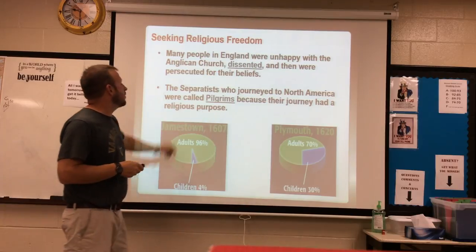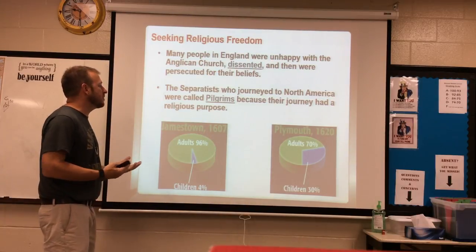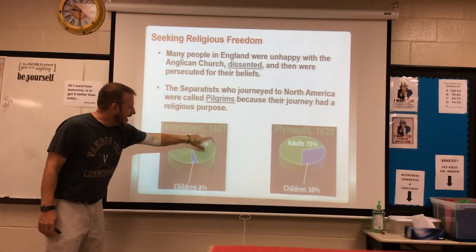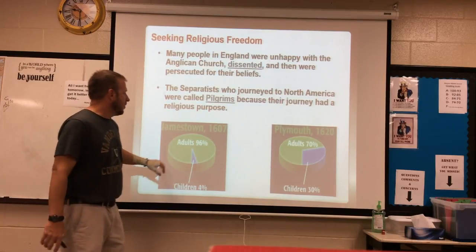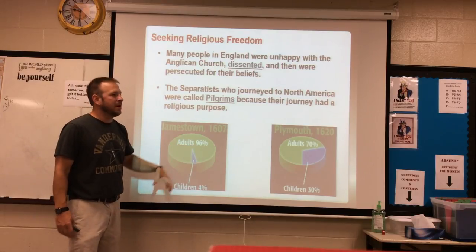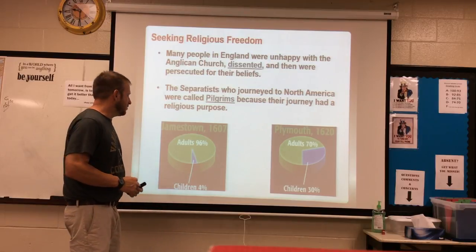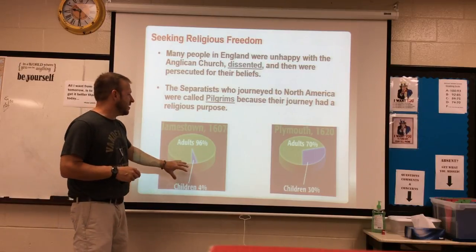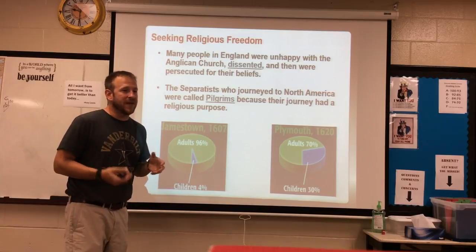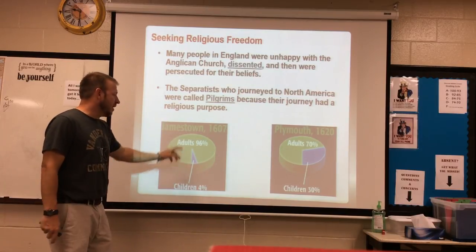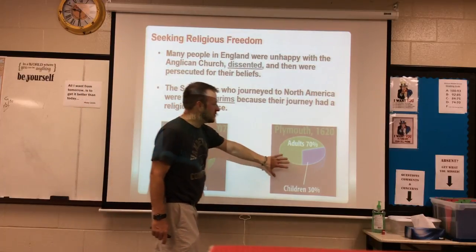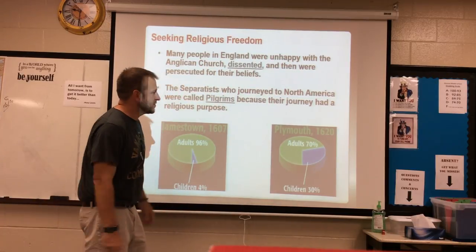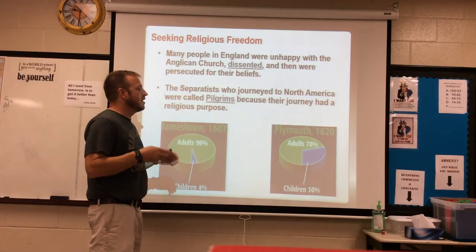The separatists who journeyed to North America were called pilgrims because their journey had a religious purpose — they were making a pilgrimage. Comparing Plymouth to Jamestown: at Jamestown in 1607, 96% of those arriving were adults, showing there was no plan to stay permanently — they were coming to get rich. Plymouth was different: 70% adults, 30% children. These were whole entire families seeking freedom from religious persecution, coming to worship as they pleased and start a new life.